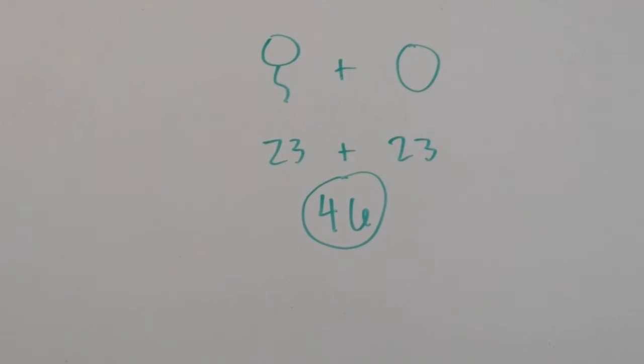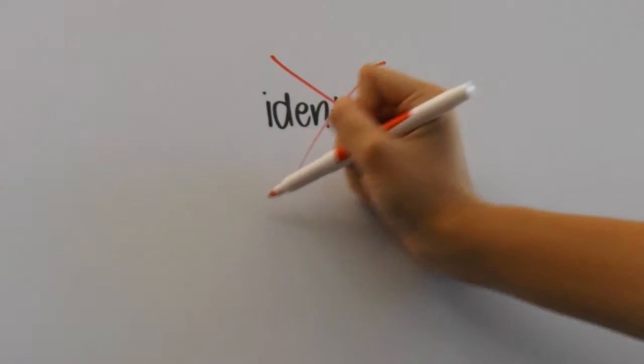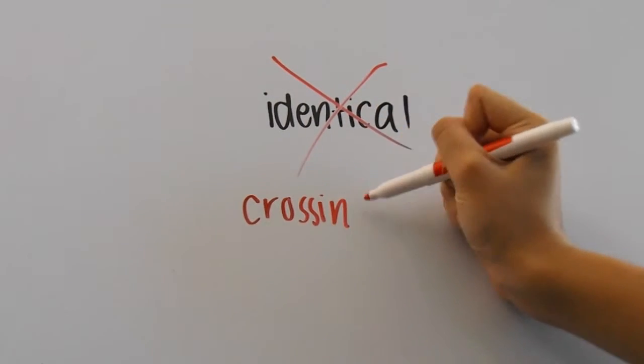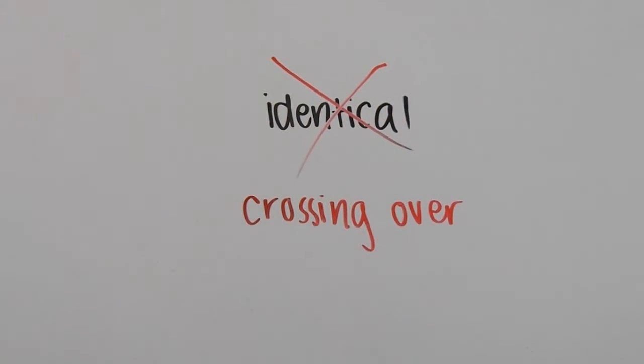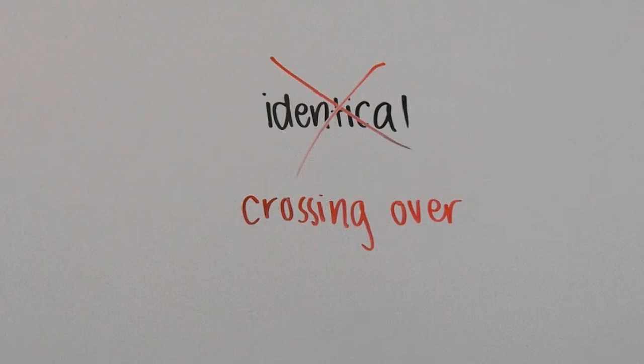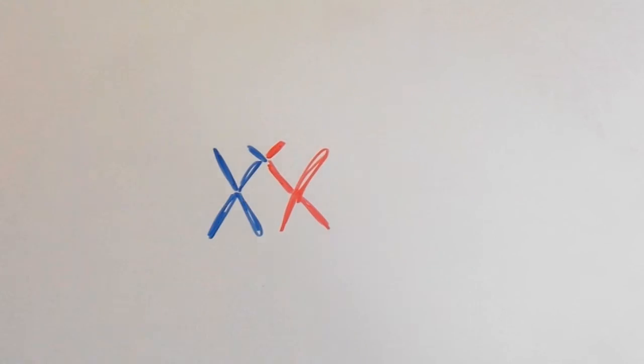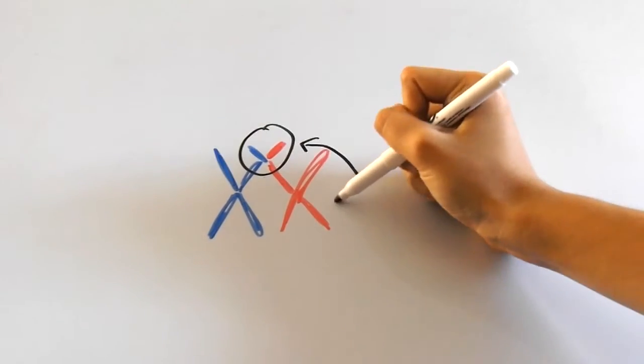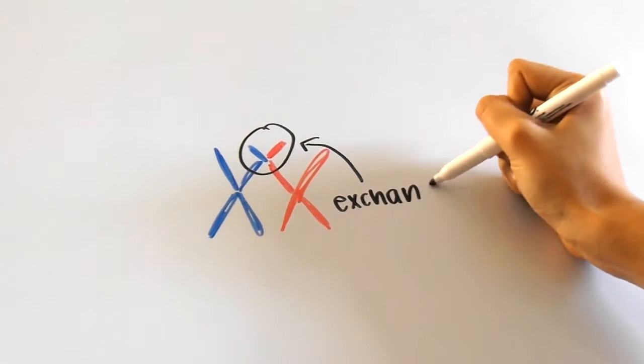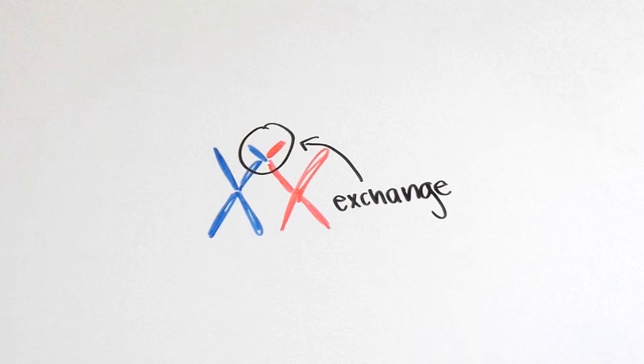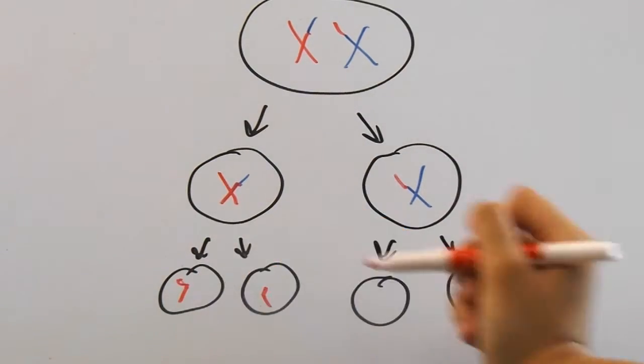Also, if you've seen my meiosis video, you'll know that all of the resulting cells from meiosis aren't all identical, and this is due to something called crossing over. Crossing over is when paired chromosomes from each parent flop over each other, exchanging genetic information. As meiosis continues, the cells divide and the end result looks like this.